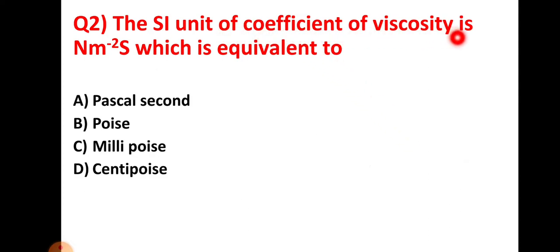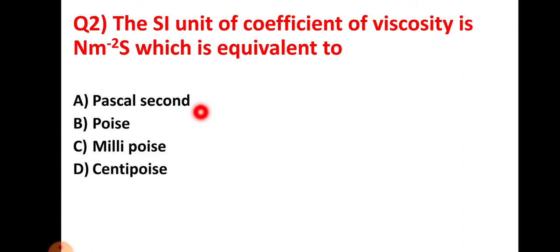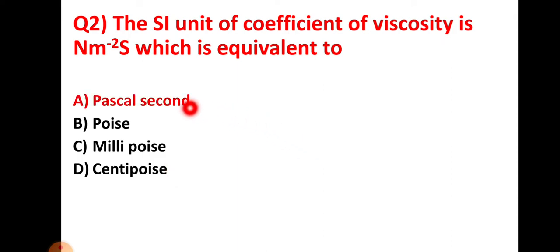Question number two: the SI unit of coefficient of viscosity is newton-second per meter squared. Which is equivalent to — option A: pascal-second, option B: poise, option C: millipoise, option D: centipoise. The right answer is pascal-second, which is equivalent to newton-second per meter squared.